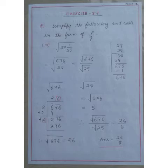So, I have done some rough work in the right side of the page. 27 into 25 is 675 and plus 1 is 676. As I have told you earlier, root of 676 by 25 is equal to root of 676 divided by root of 25.